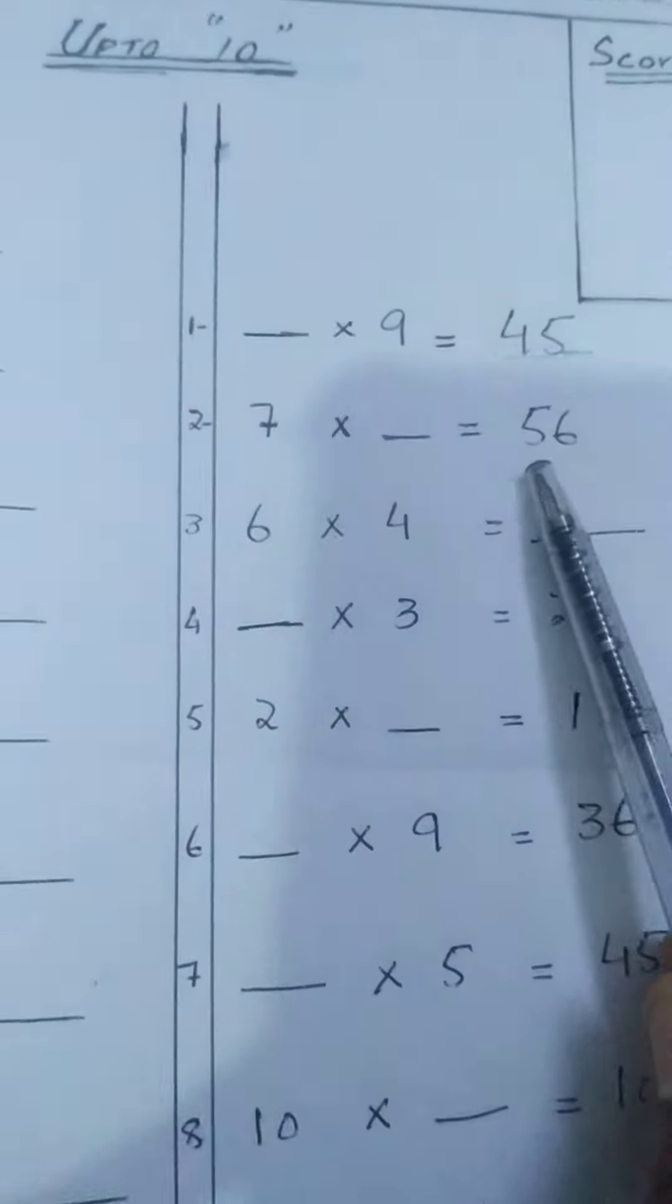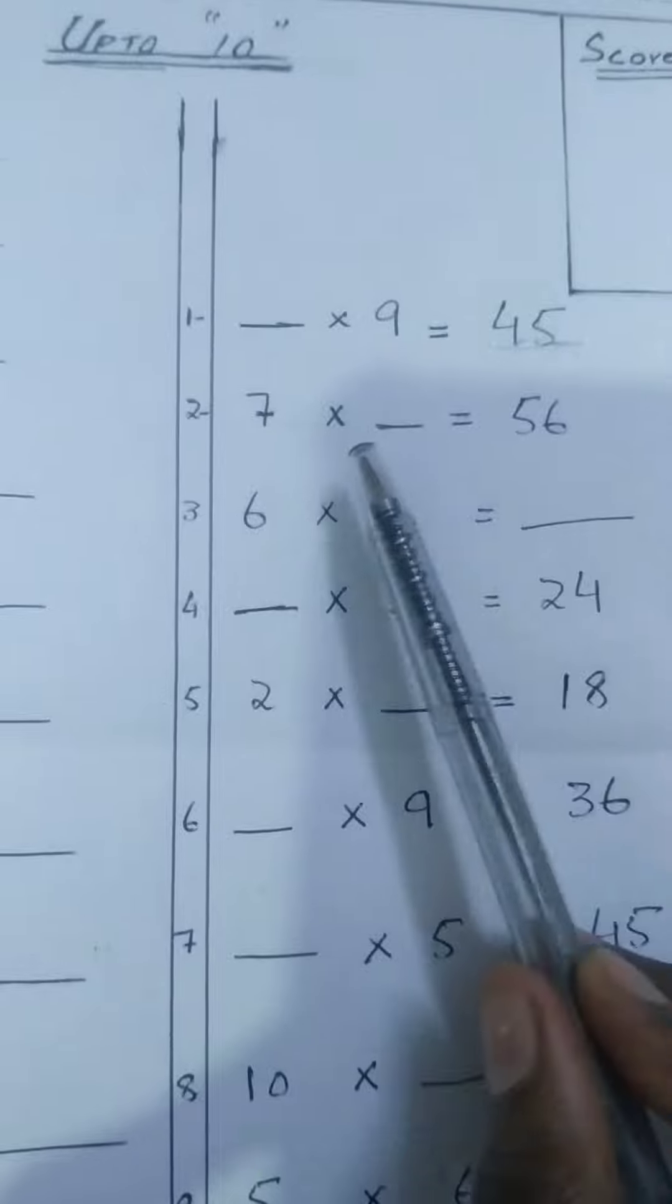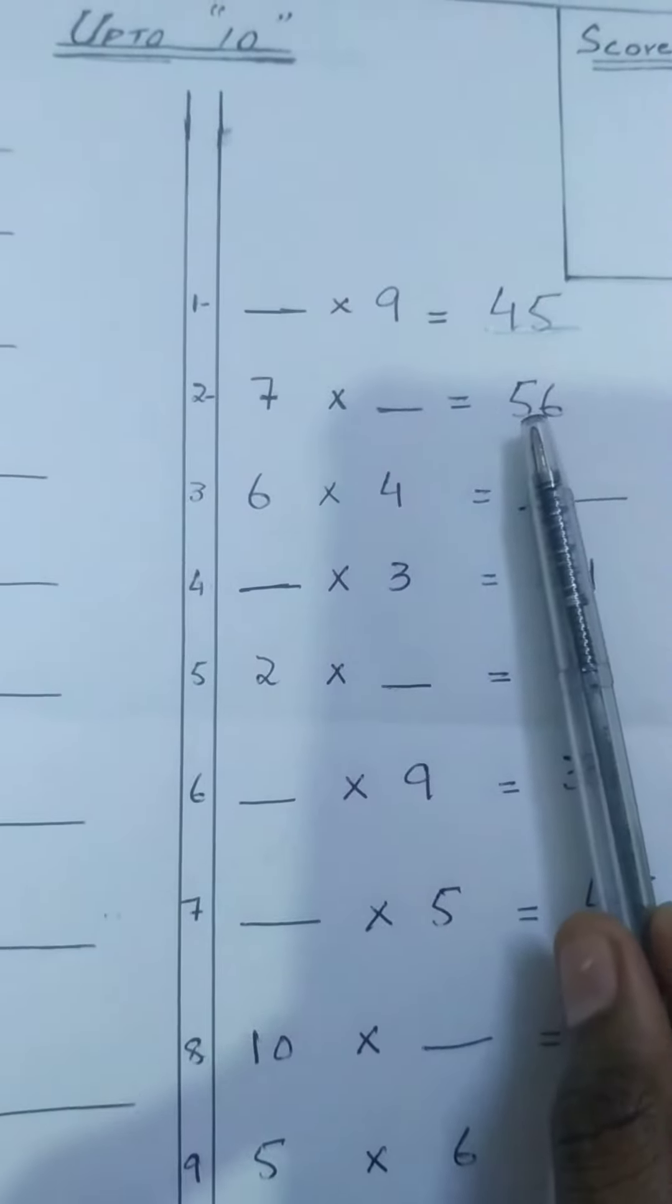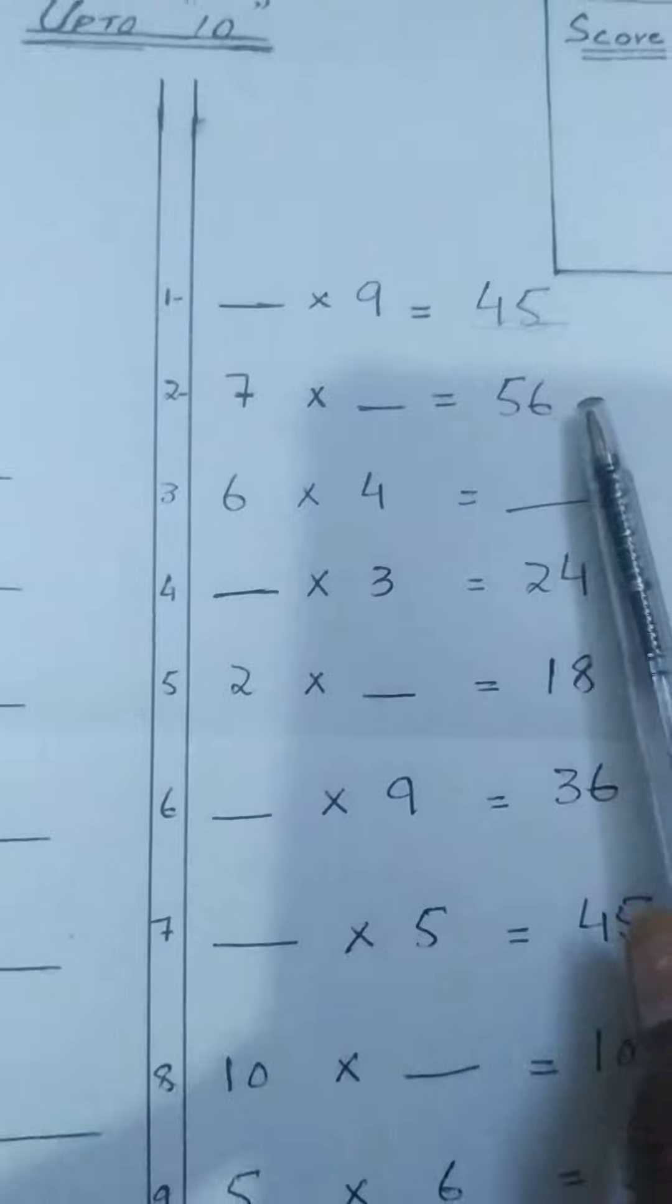Similarly, like this, 7, the answer is 56. So in the table of 7, how many times has 56 come? 7 x 8s are 56.